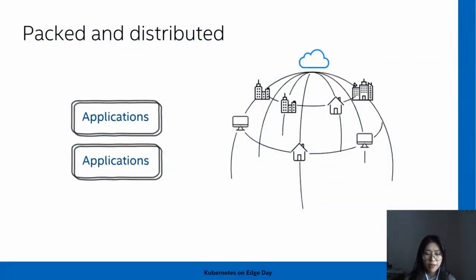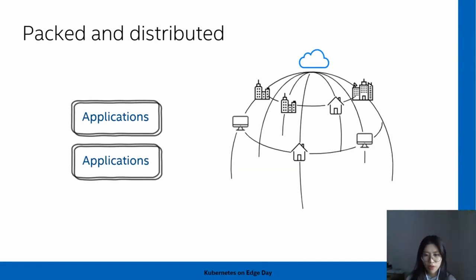We all know that now applications and services have been moved to the cloud. They are usually packed in a cloud-native way as containers or services served on Kubernetes clusters. Benefiting from the characteristics of cloud, applications can be distributed everywhere depending on the user's need. They could be located in the traditional data center, on the public cloud, or on edge clusters residing in a telecom's branch office or even in a local device.